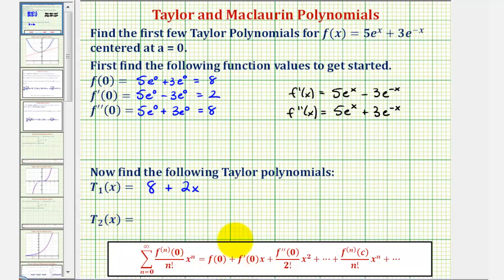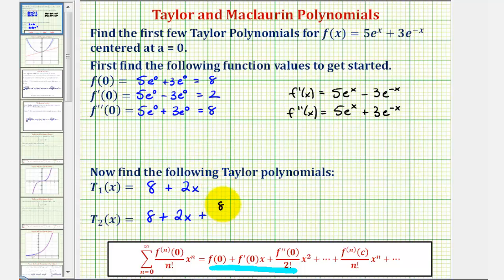And now for the degree two Taylor polynomial, we'll use the first three terms of the Maclaurin polynomial. The first two terms would be the same — we'd have eight plus two x — and then we'll have plus f double prime of zero, which is eight, divided by two factorial times x squared. Two factorial is equal to two times one or two, so this simplifies to eight plus two x plus four x squared.